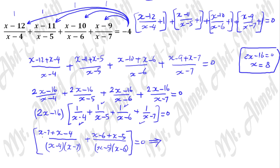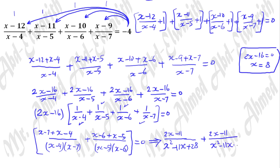Simplifying the numerators: x minus 7 plus x minus 4 equals 2x minus 11, over (x minus 4)(x minus 7) which equals x squared minus 11x plus 28. Similarly, x minus 6 plus x minus 5 equals 2x minus 11, over x squared minus 11x plus 30. So we have (2x minus 11) over (x squared minus 11x plus 28) plus (2x minus 11) over (x squared minus 11x plus 30) equals 0.